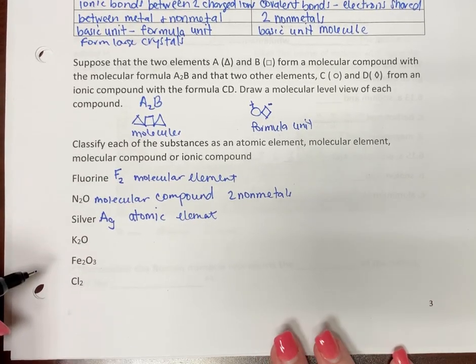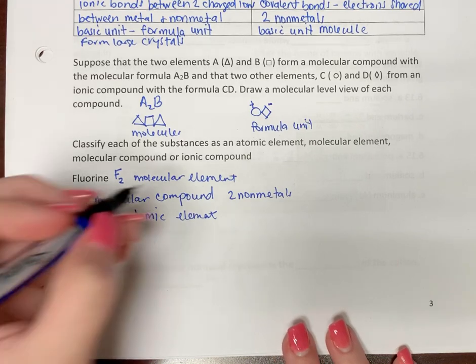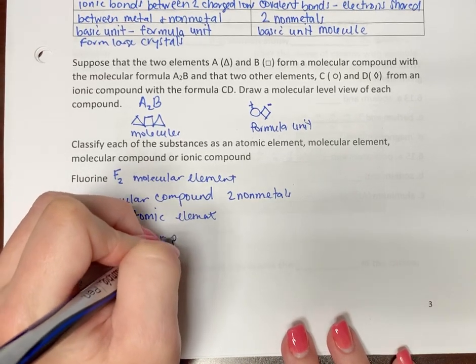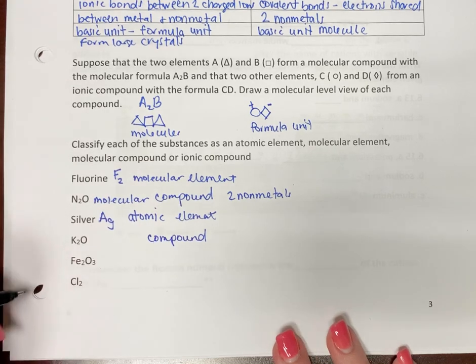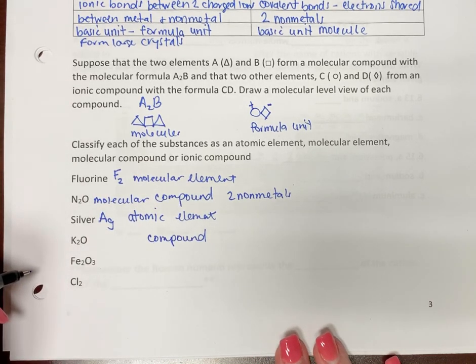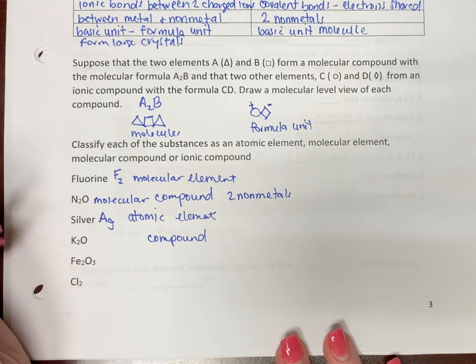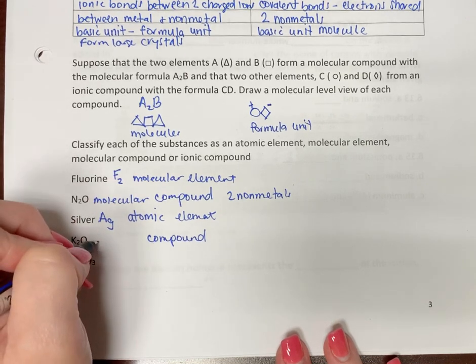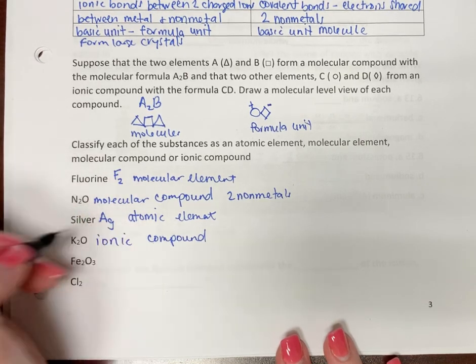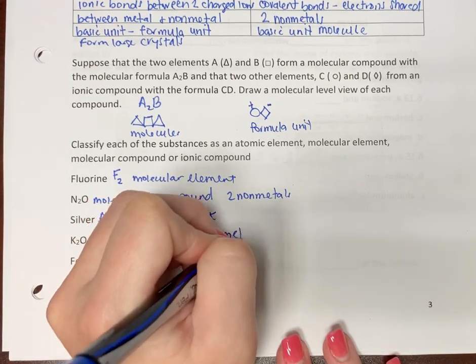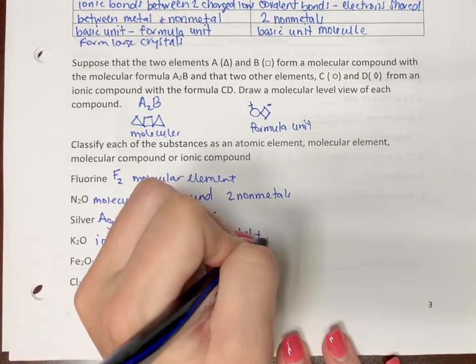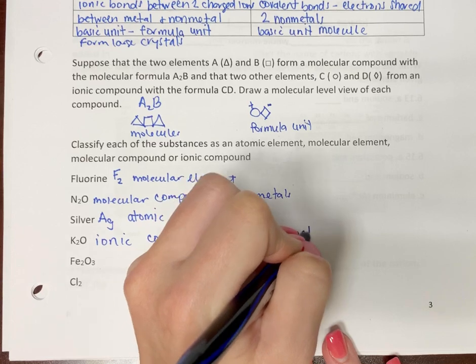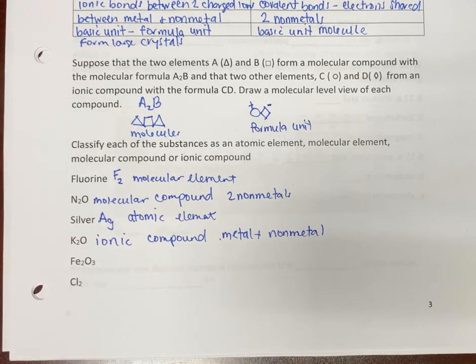K2O. Is it an element or a compound? It's a compound. Is it ionic or molecular? Potassium oxide would be ionic because potassium is a metal and oxygen is a nonmetal. You have to know these. The difference between ionic and molecular compounds.